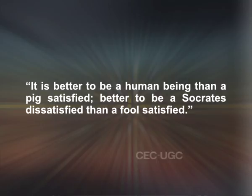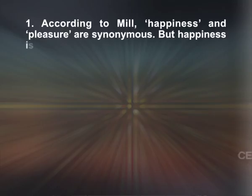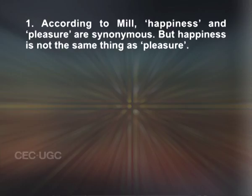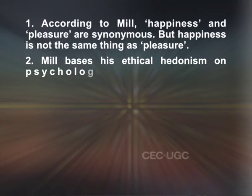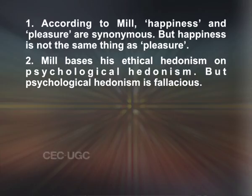Criticism on Mill's utilitarianism: Number 1 — According to Mill, happiness and pleasure are synonymous, but happiness is not the same thing as pleasure. Pleasure is transient while happiness is abiding. Pleasure arises from the gratification of a single desire, but happiness is a feeling that arises out of the systematization of desires. Number 2 — Mill bases his ethical hedonism on psychological hedonism, but psychological hedonism is fallacious. We do not directly desire pleasure; pleasure arises when the desired object is attained. Moreover, the more we hanker after pleasure, the less we get it. This is the fundamental paradox of hedonism.